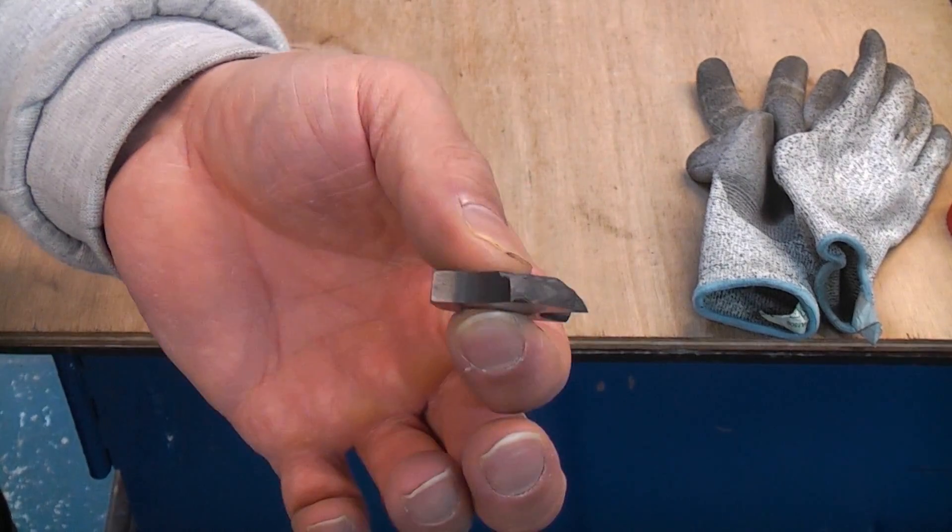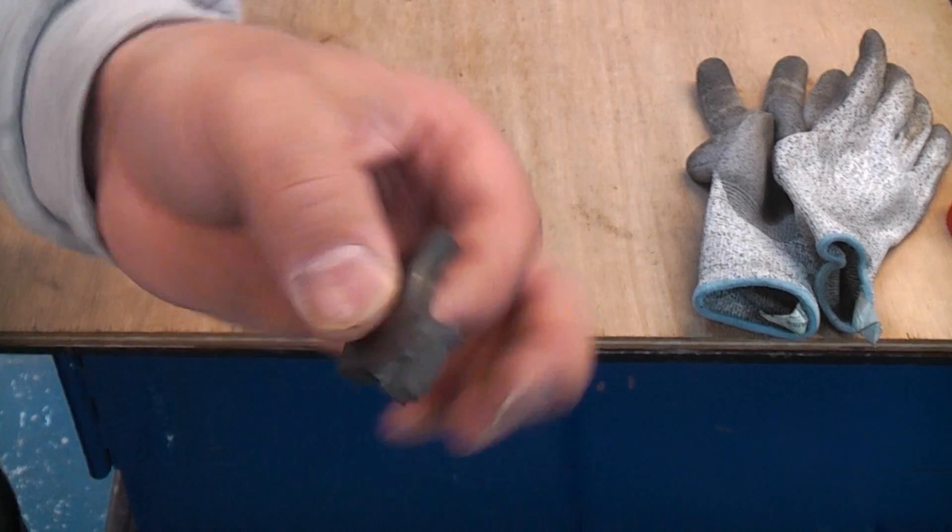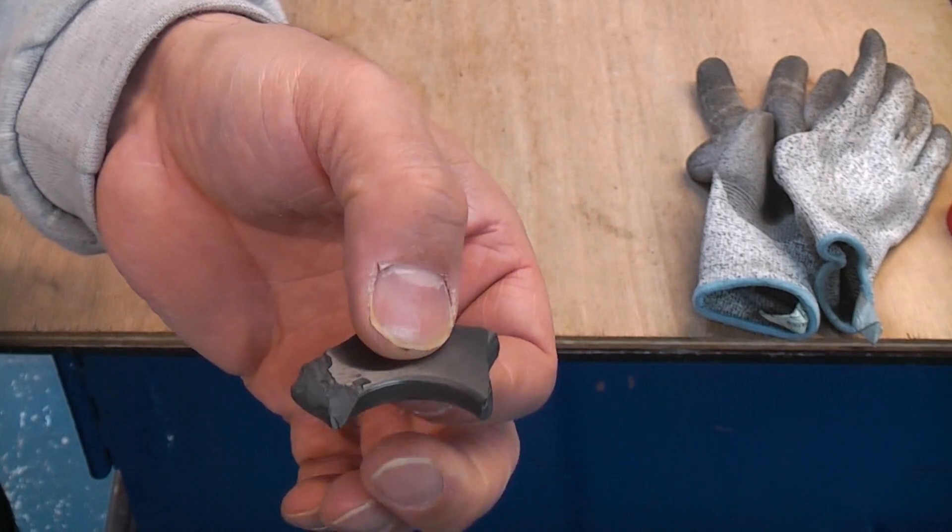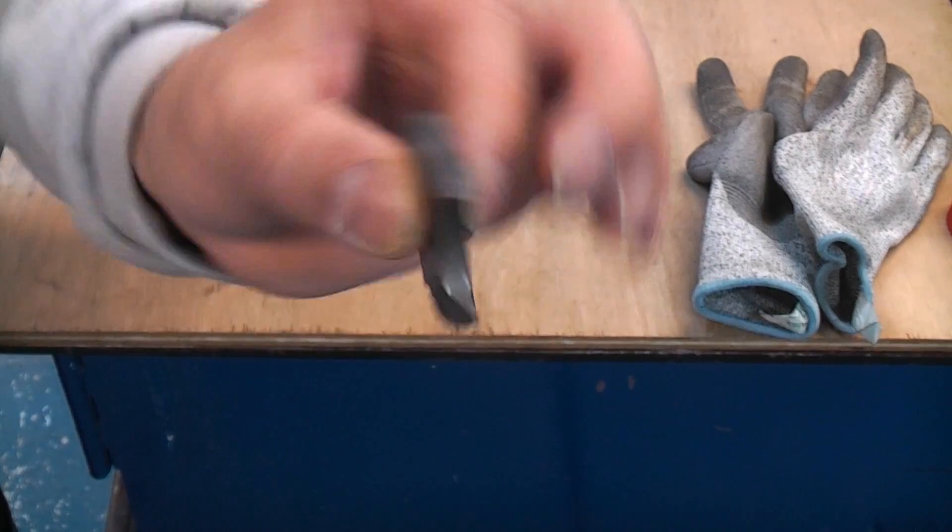If you're not familiar with tungsten carbide, it is a very dense metal so it is very heavy and also very tough. If you try cutting it or drilling it you are really going to struggle.